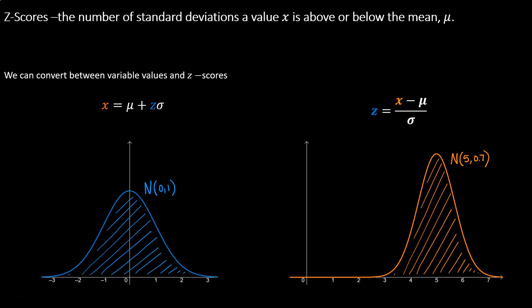Because most data sets are not already standardized, we have to talk about the idea of a z-score. A z-score is the number of standard deviations a value x is above or below the mean mu. On the screen I have two curves: the blue standard normal distribution with mean 0 and sigma of 1, and an orange curve — a non-standard normal with a mean of 5 and a sigma of 0.7.